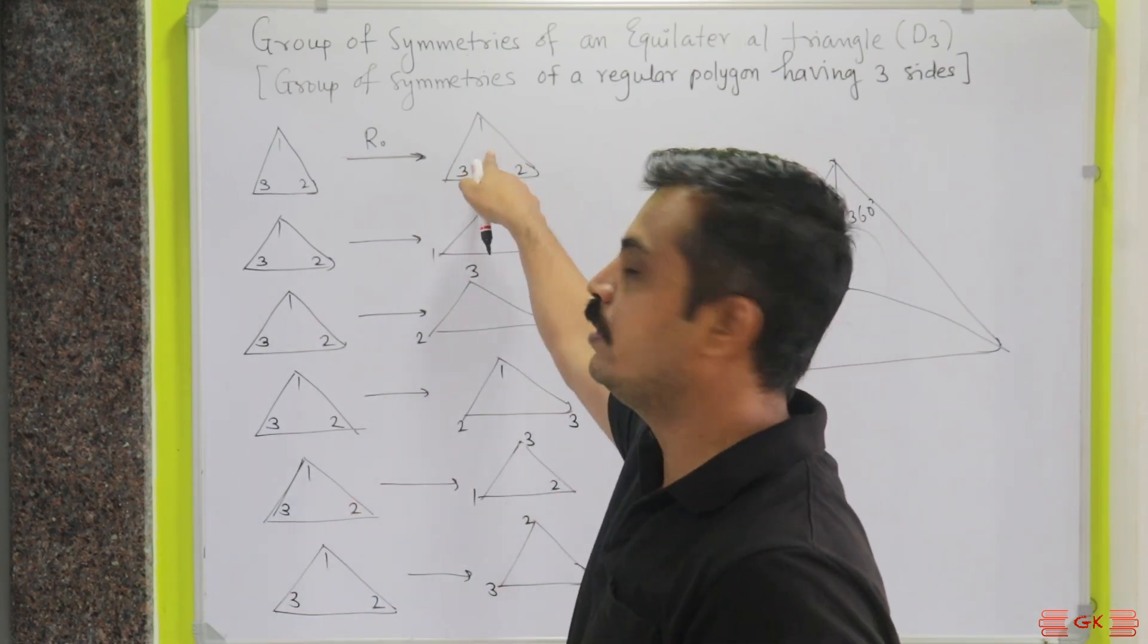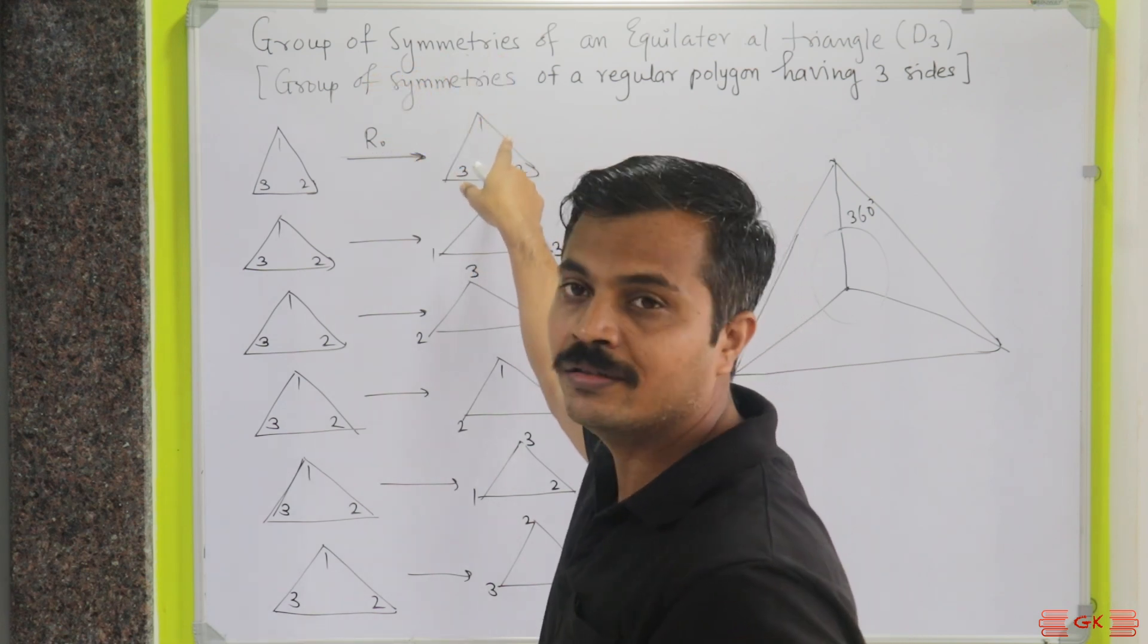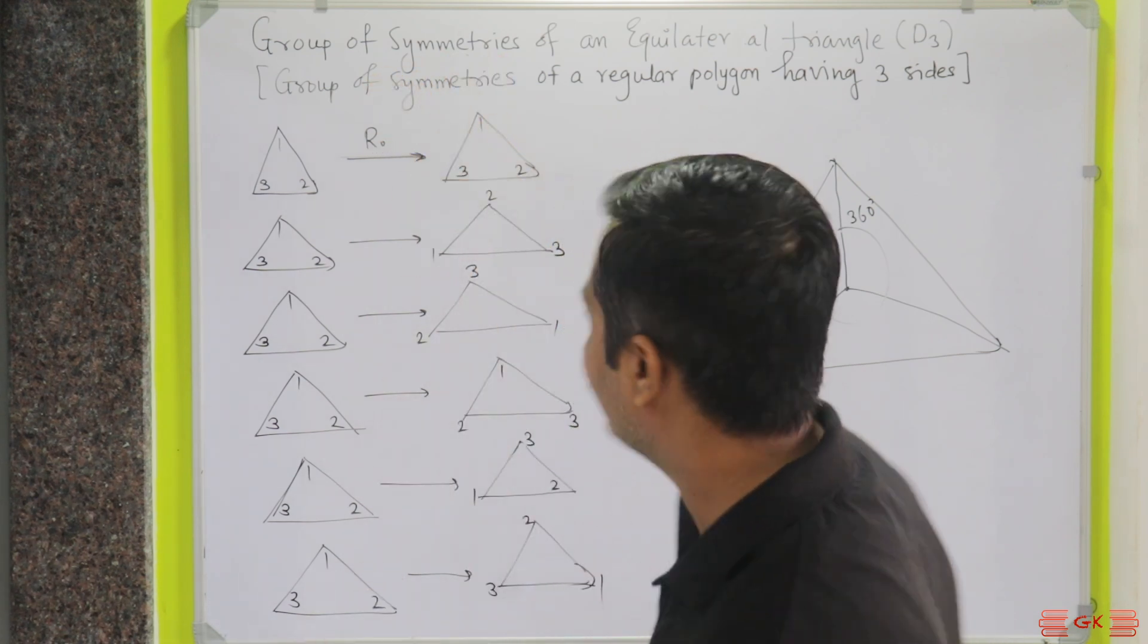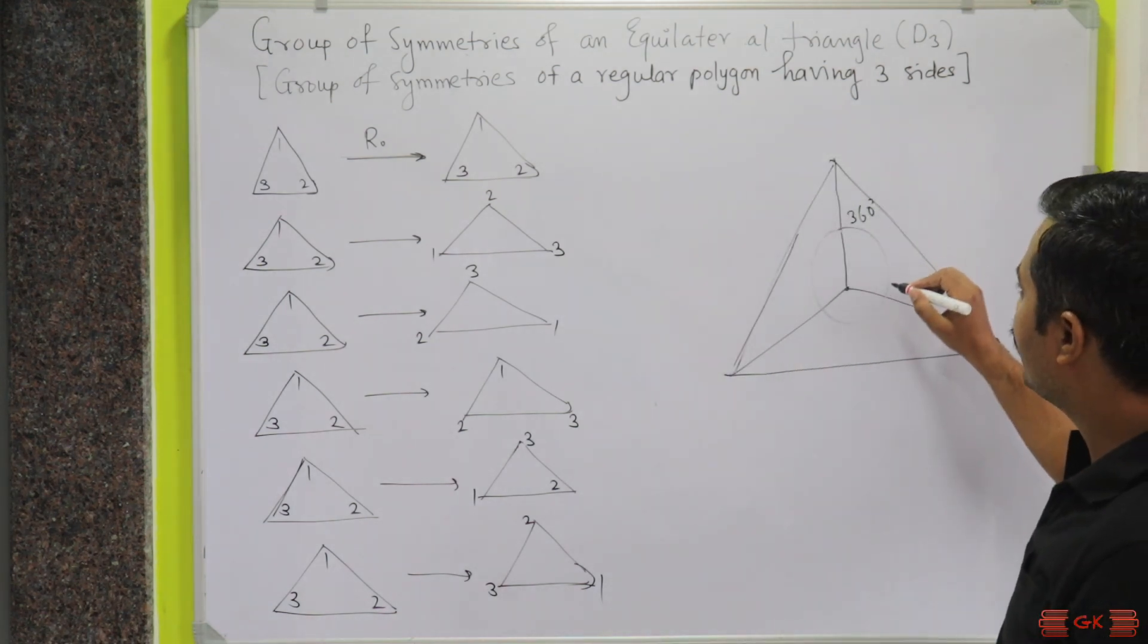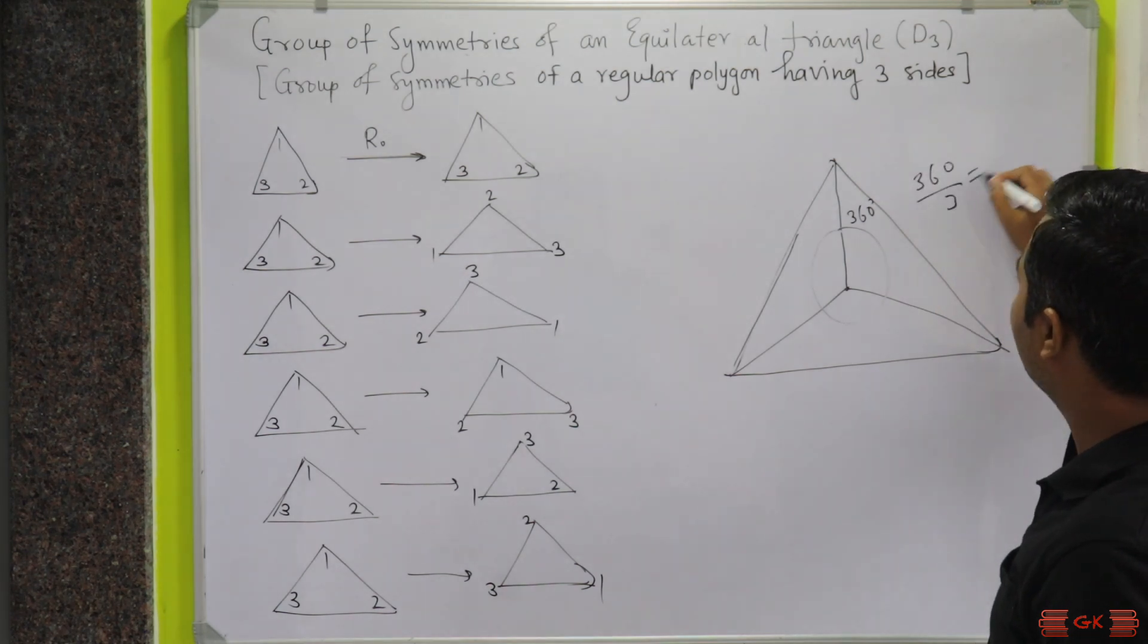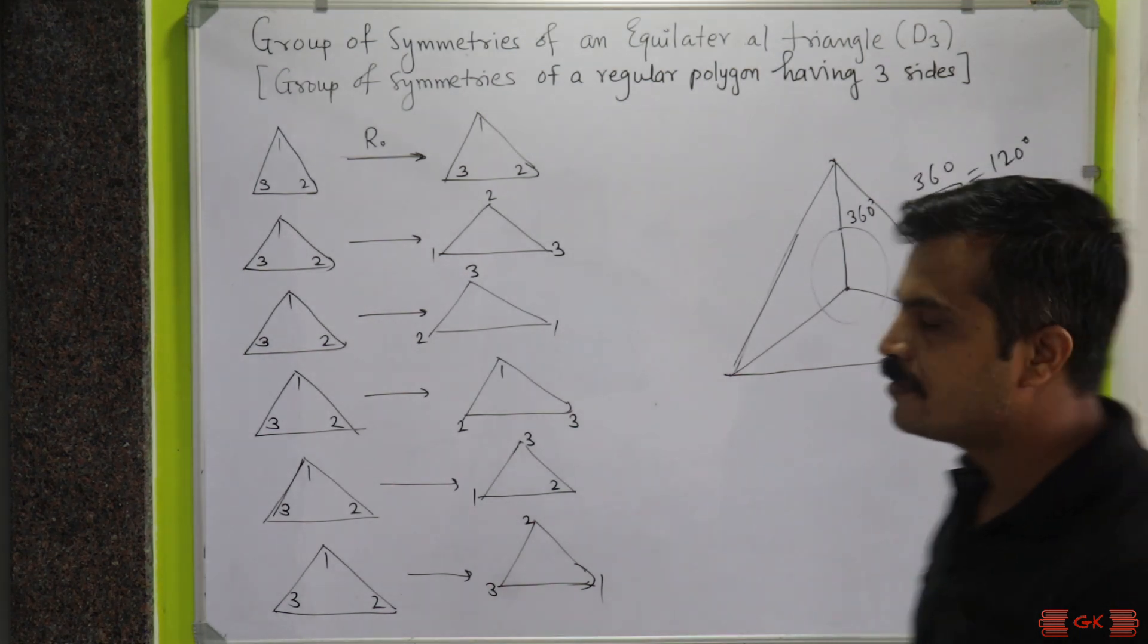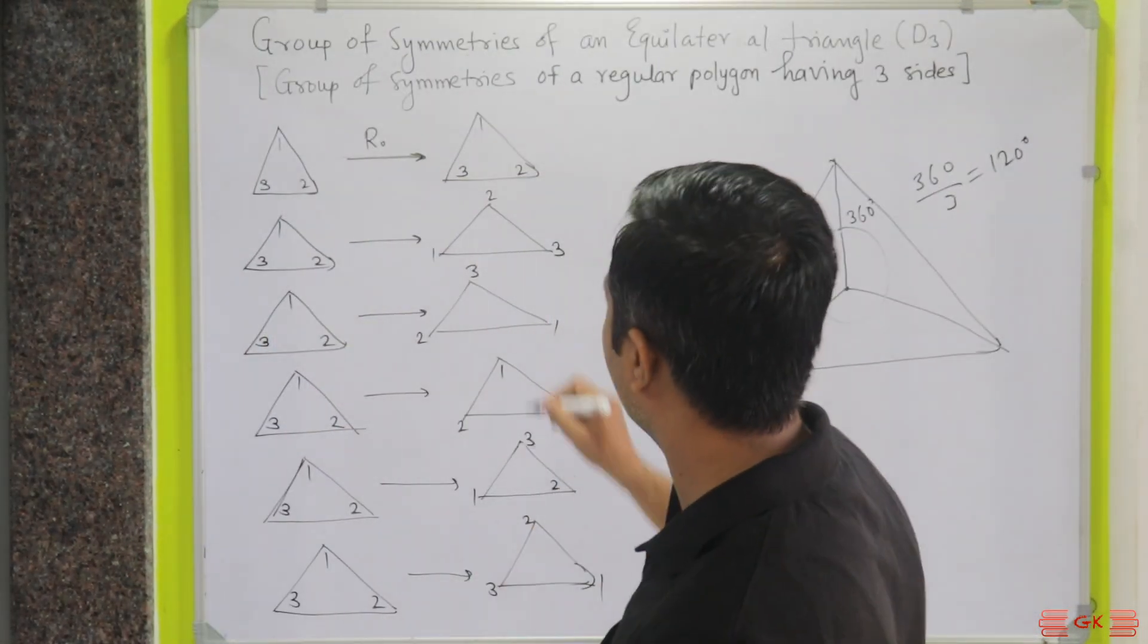If you start with this and rotate it three times, then you are going to come to this position, 140 degrees. So, we will divide 360 degrees by 3. If you divide 360 by 3, then you will get 120 degrees. Thus, the degree of rotation in this case is 120 degrees.